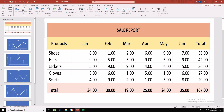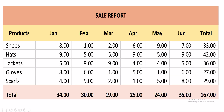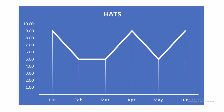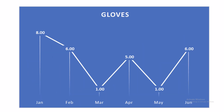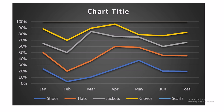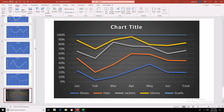So if I just simply run this presentation first — this is the sales report with shoes, hats, jackets, gloves, scarves, and the total. These are the months. When I go to the next slide it is a separate graphs — line charts for each category: shoes, hats, gloves, scarves, and jackets. And then there is a comparison for all of the categories.